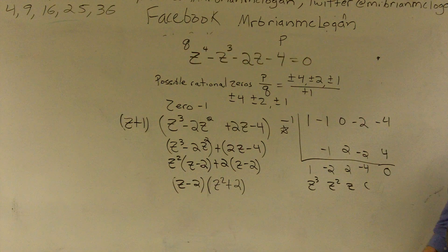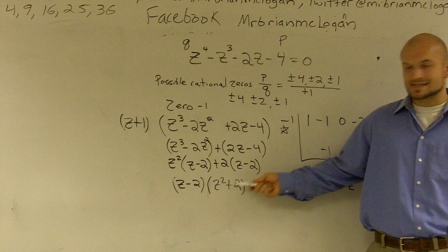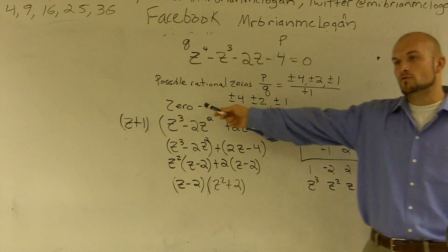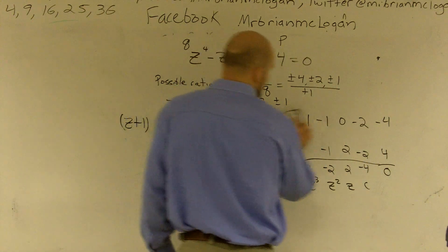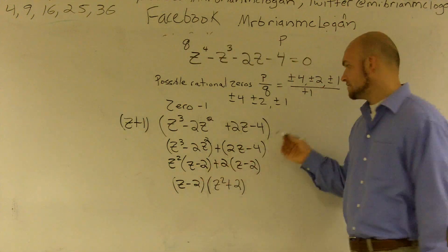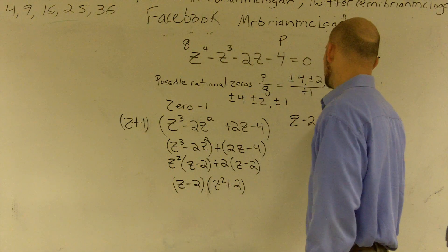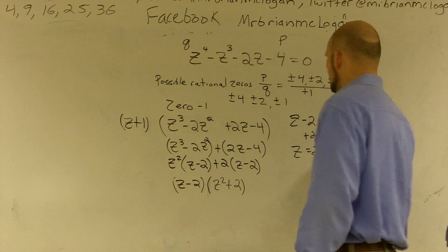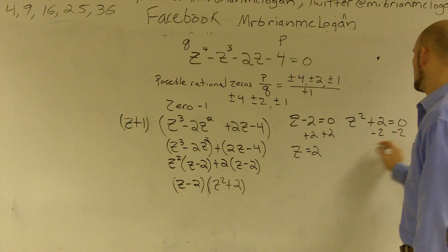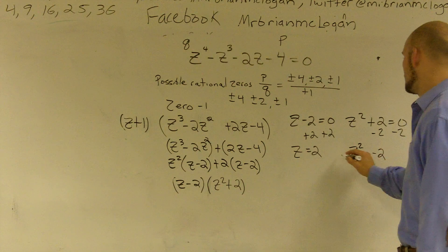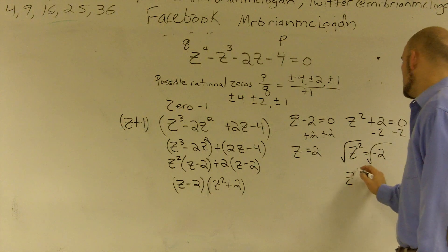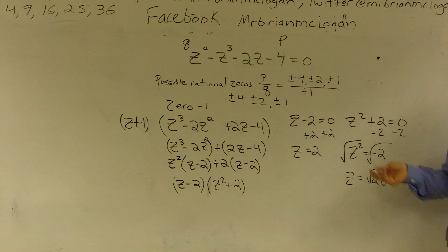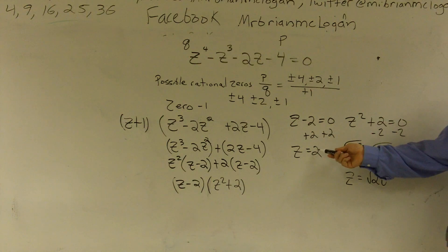Therefore now, my three factors are z plus 1, z minus 2, and z squared plus 2. But the original problem tells me to find what the zeros are. I know one zero was negative 1. To find my other zeros, I've got to set these equal to zero. So z minus 2 equals zero, z equals 2. And z squared plus 2 equals zero, subtract 2, z squared equals negative 2. Square root, z equals plus or minus square root of 2i. So this is an imaginary root. It's allowed. It's possible.